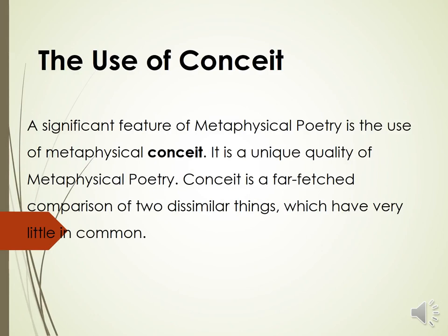A significant feature of metaphysical poetry is the use of the metaphysical conceit — it is a unique quality of metaphysical poetry. Conceit is a far-fetched comparison of two dissimilar things which have very little in common. It is a comparison between two things that are rarely similar to or related to each other. It is a kind of imagery, or an extended imagery inherited from the Elizabethan age, but used in different ways.